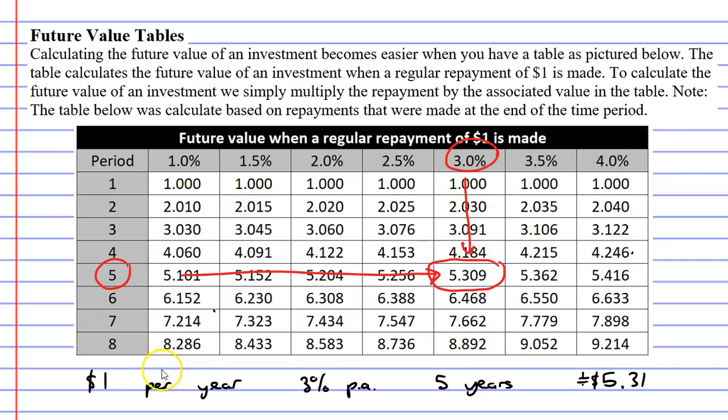Now, you might say, well, who makes one dollar repayments? Most of our questions are different to that. For example, let's say we're making repayments of $1,000.